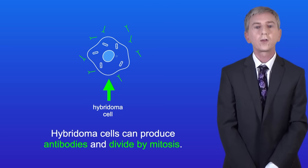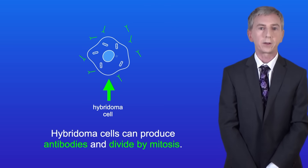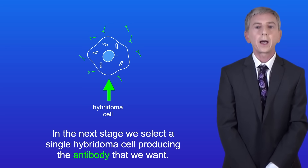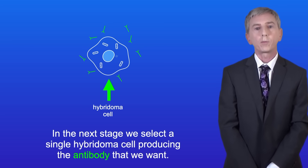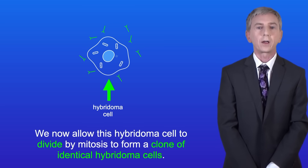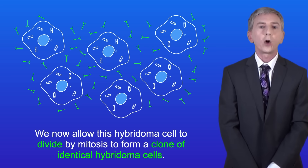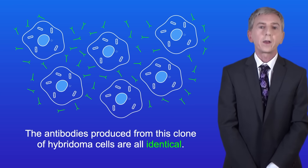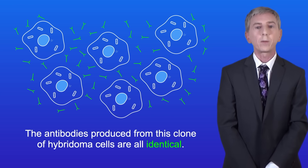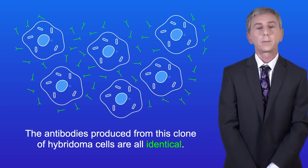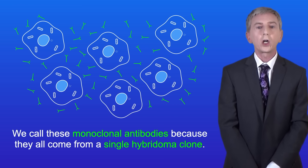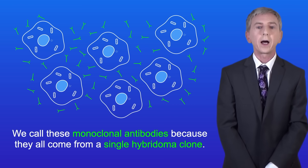Hybridoma cells can produce antibodies and divide by mitosis. In the next stage we select a single hybridoma cell producing the antibody that we want. We now allow this hybridoma cell to divide by mitosis to form a clone of identical hybridoma cells. So the antibodies produced from this clone of hybridoma cells are all identical. We call these monoclonal antibodies because they all come from a single hybridoma clone.